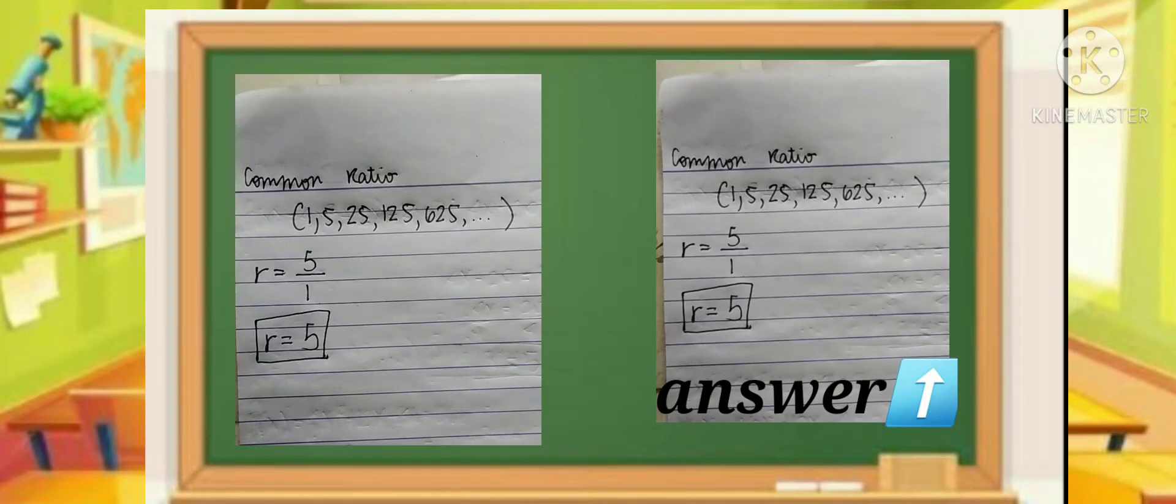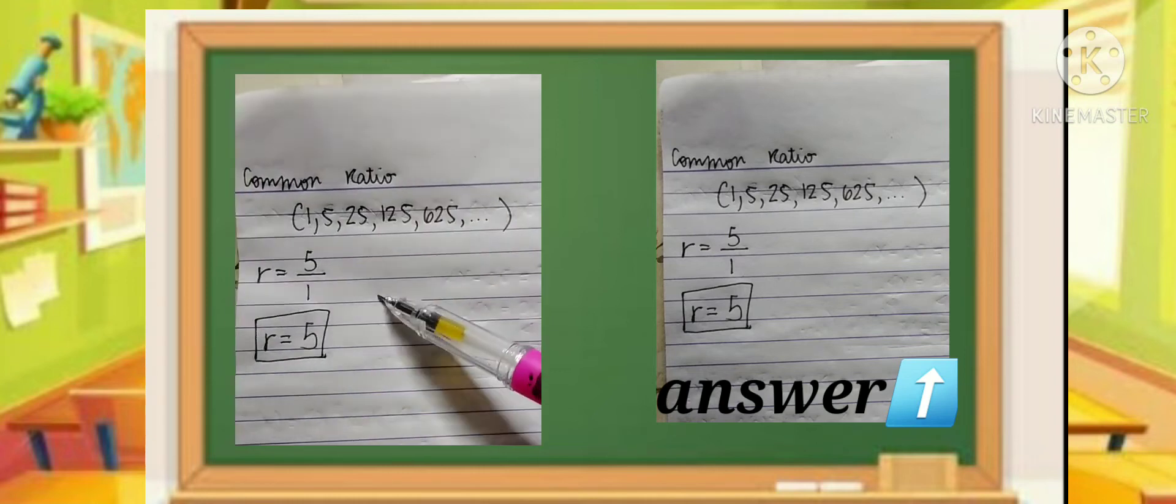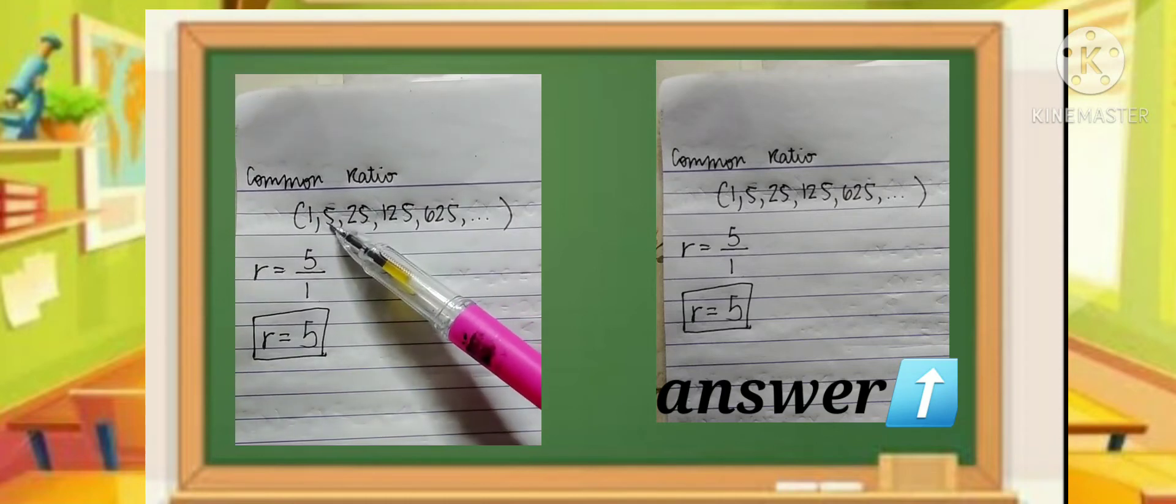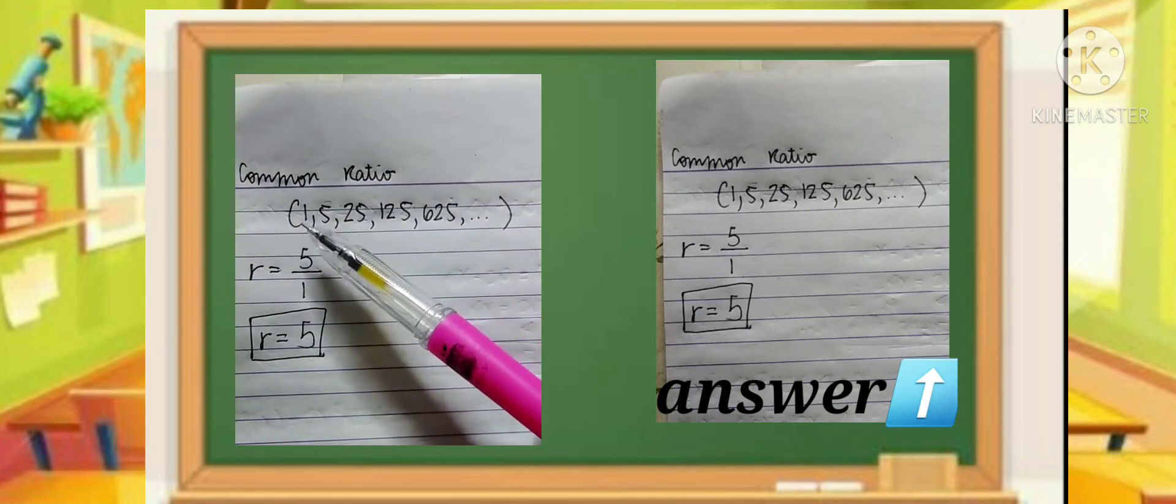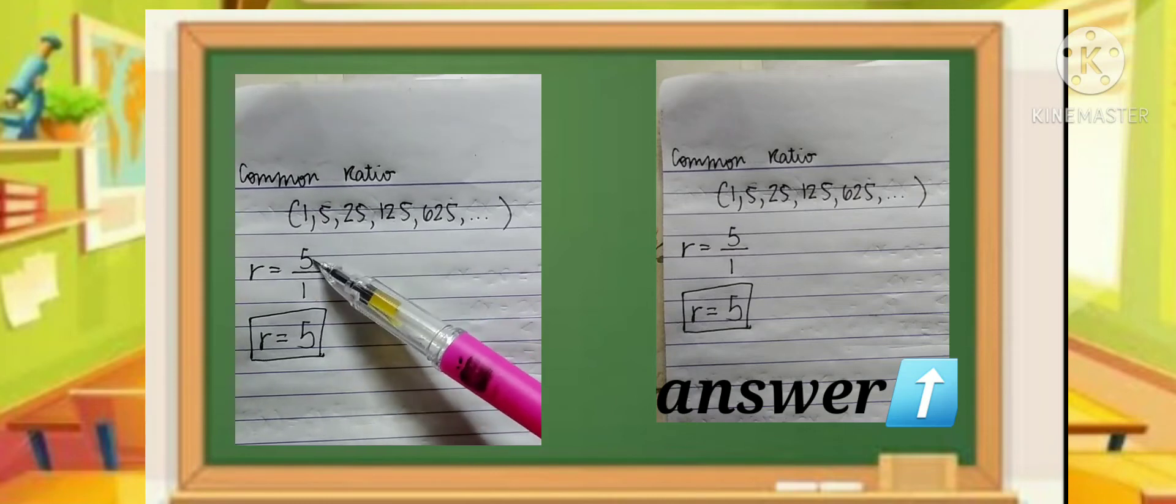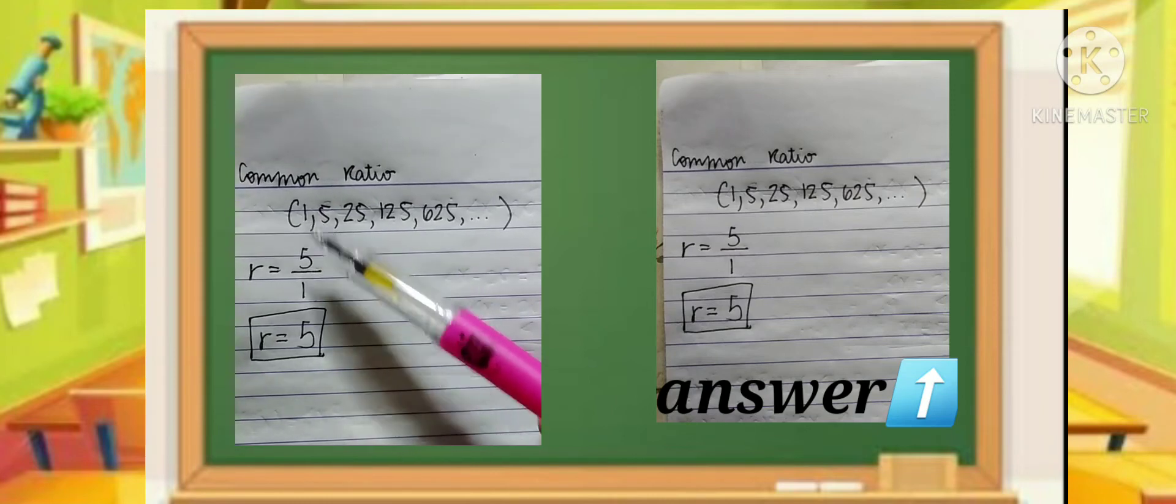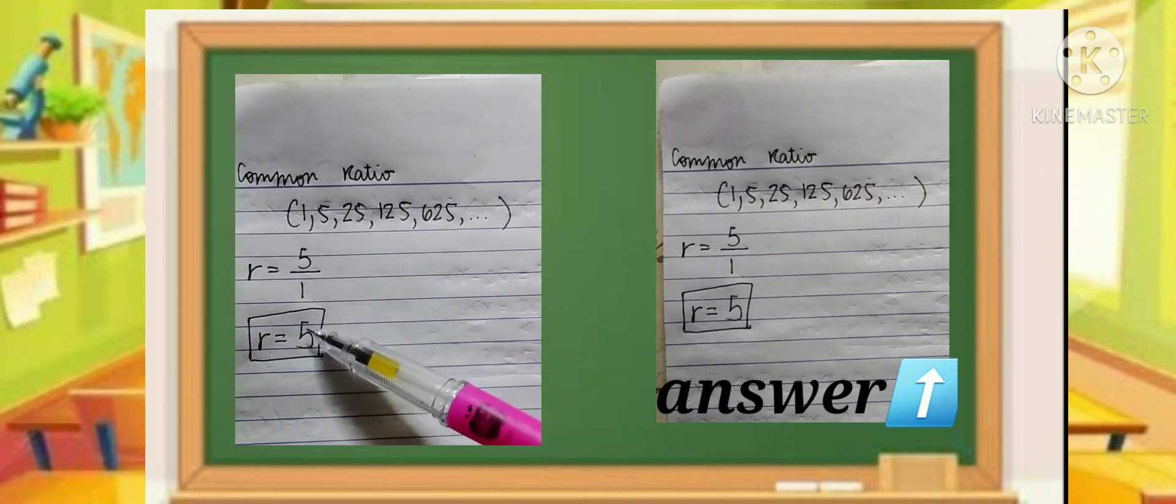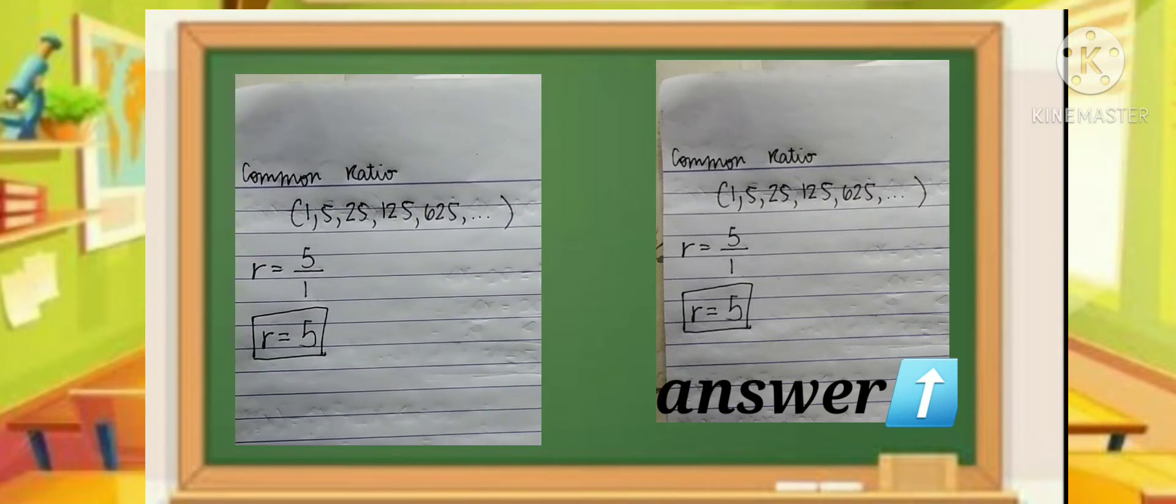The given is 1, 5, 25, 125, 625. We'll use the formula second term divided by first term. Our second term is 5 and our first term is 1, so 5 over 1. Divide them and you get 5. So our ratio is 5. For others, it's a fraction. That's how we find the ratio.